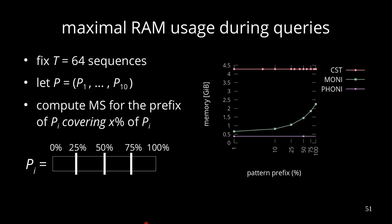We can see that CST and FONI are kind of constant — just a very insignificant increase. But for MONI, it's more considerable.